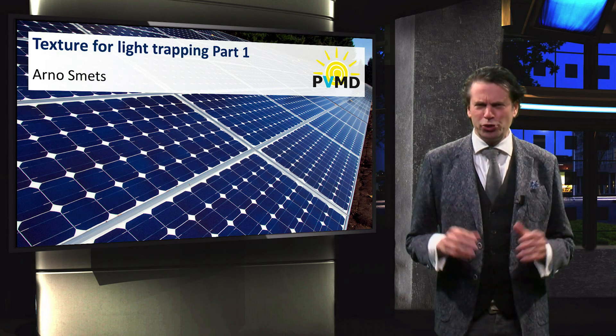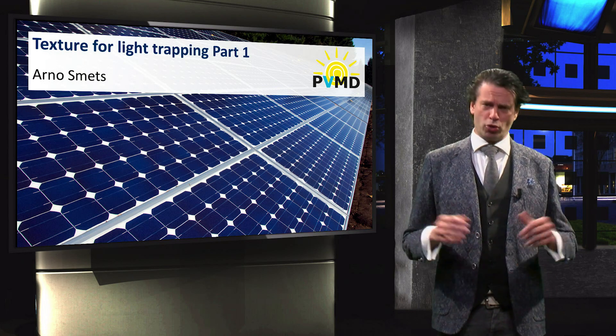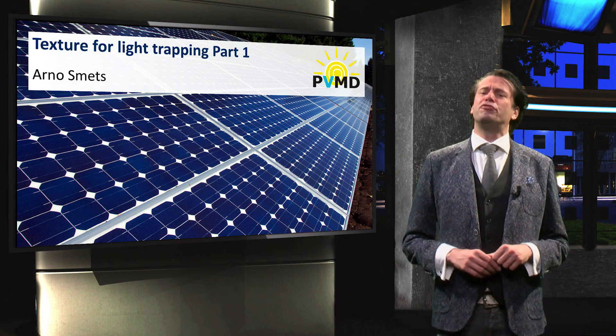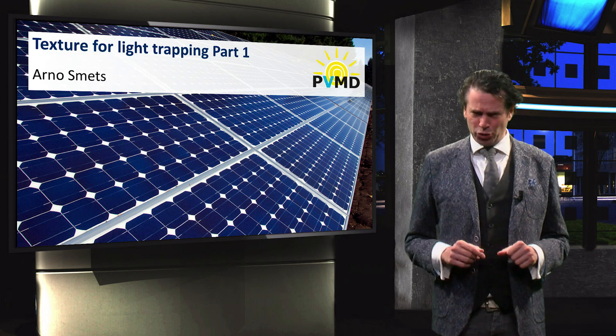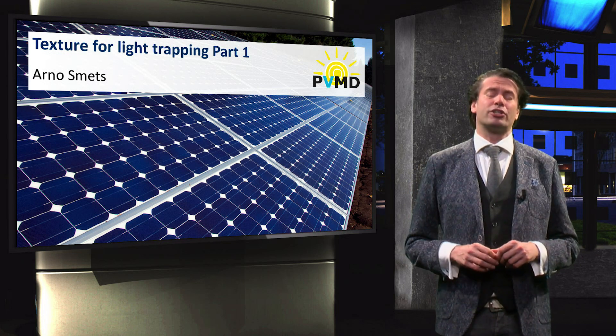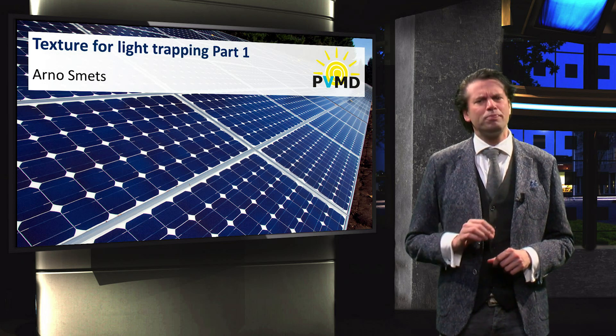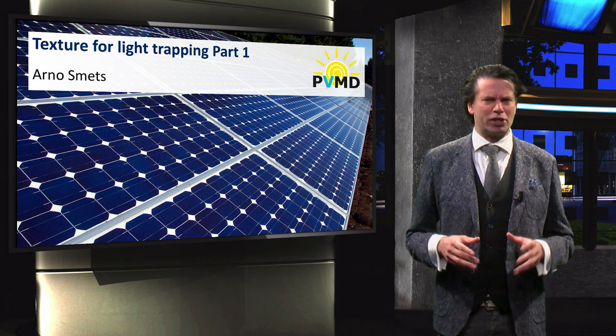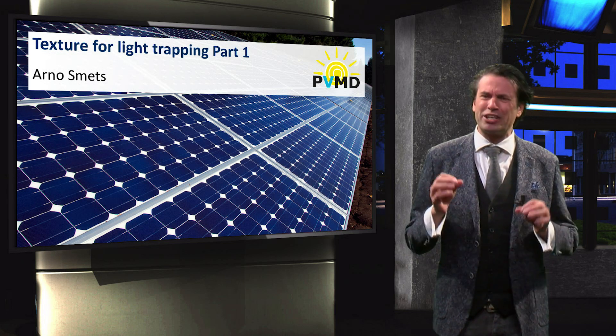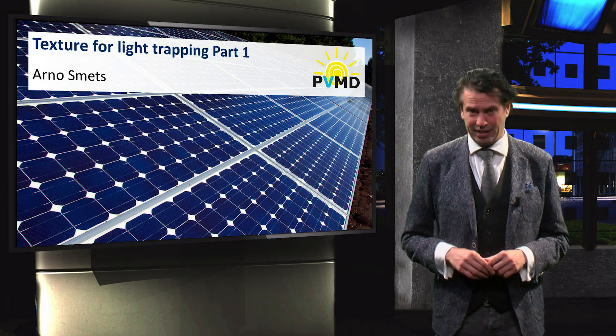There are some major challenges to using silicon alloys for thin film solar cells. In the previous video we discussed the light-induced degradation from which amorphous silicon suffers. In this video we will discuss the challenges related to using surface roughness to increase light trapping in thin films.